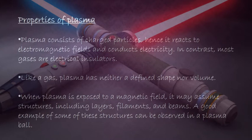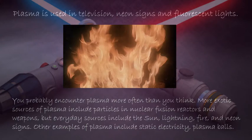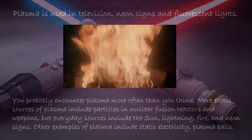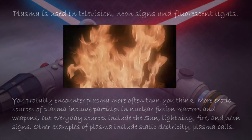Now we will take a look at the properties of plasma. Plasma consists of charged particles, hence it reacts to electromagnetic fields and conducts electricity. In contrast, most gases are electrical insulators. Plasma has neither a defined shape nor a definite volume. When plasma is exposed to a magnetic field, it may assume structures including layers, filaments, and beams — a good example of which can be observed in a plasma ball. Plasma is also used in televisions, neon signs, and fluorescent lights. Common examples we observe of plasma include the sun, lightning, and fire.